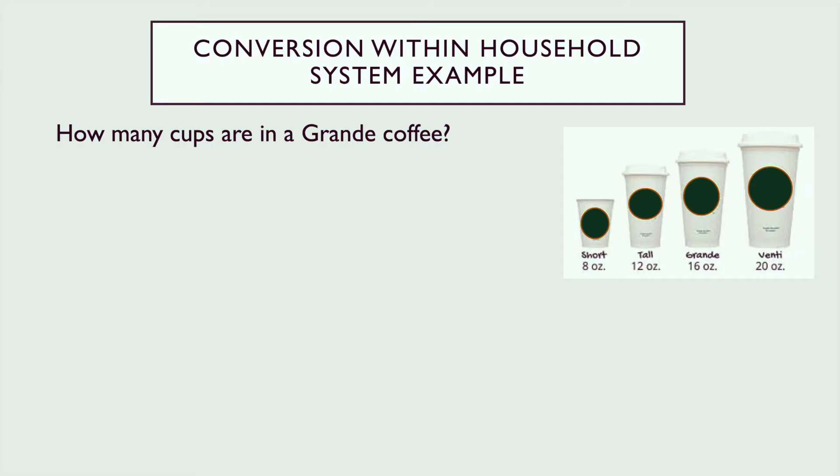Our first example is going to be conversion within the household system. We want to know how many cups are there in a grande coffee. If we look over here it tells us that the grande is 16 ounces.